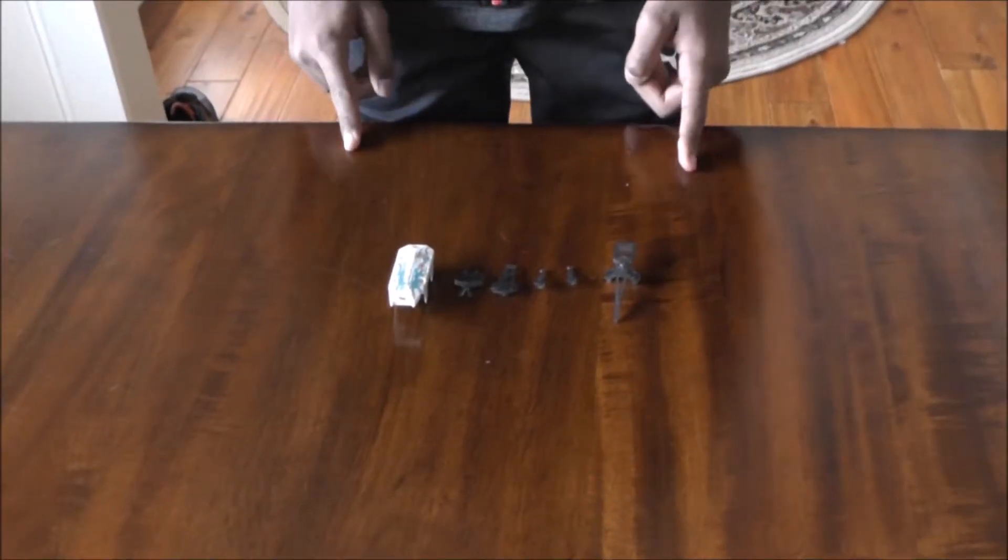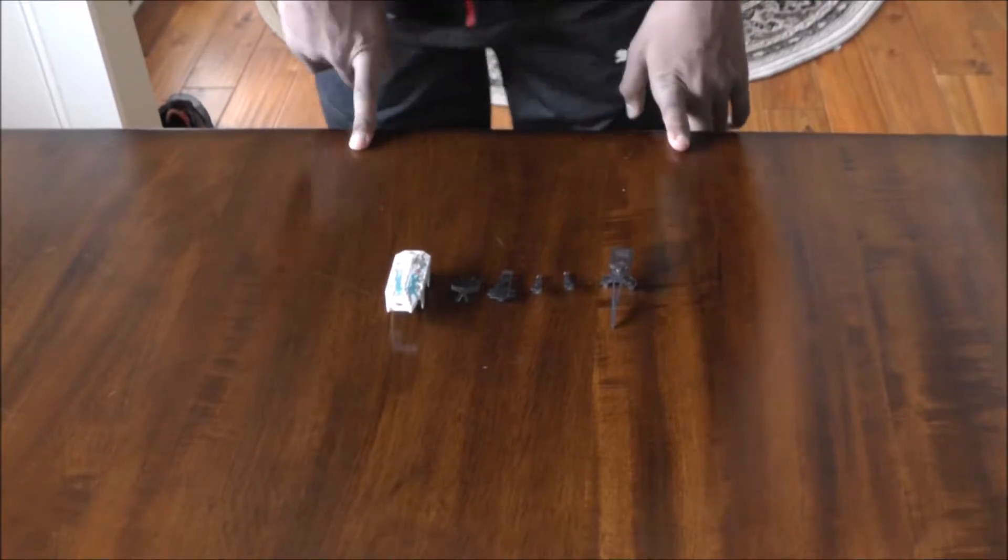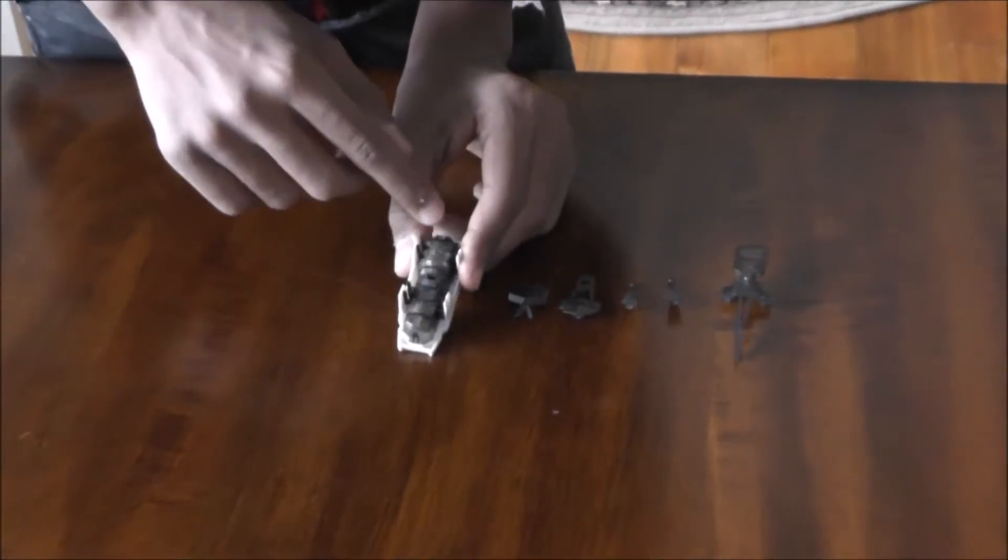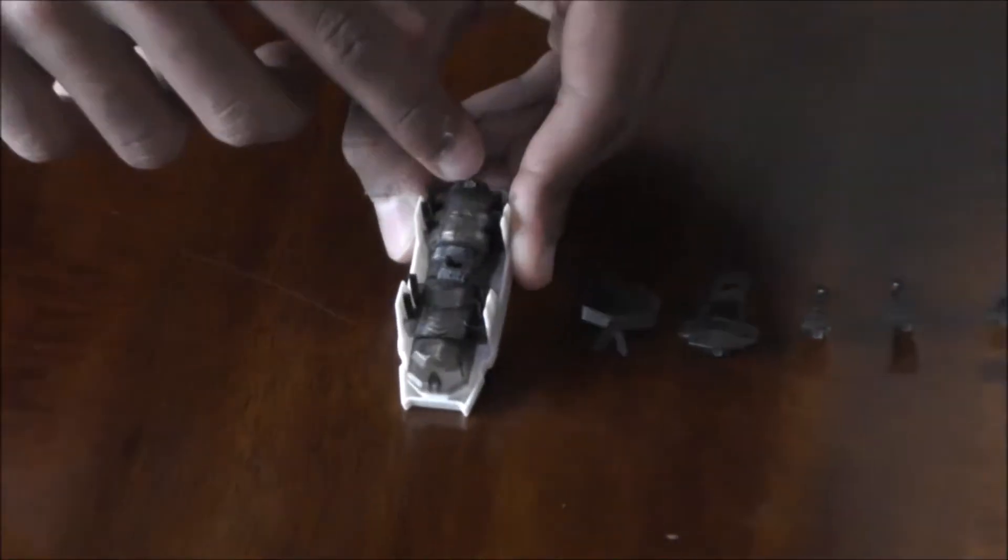Today we are going to be learning how to make and use a Gladiator Hex Bug. Let's start by turning it around. Once you see this screw, you're looking at the back. So let's turn it back around.